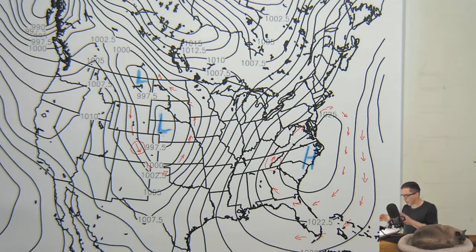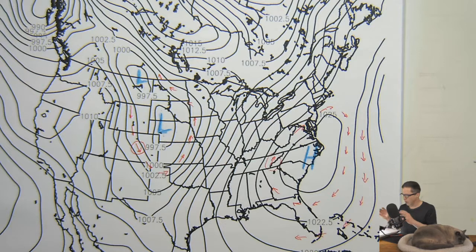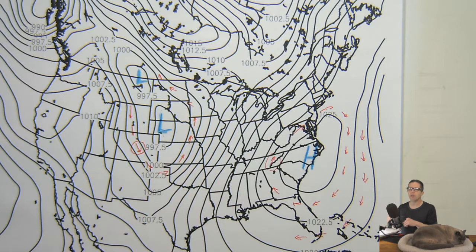If you get one that's in the southern hemisphere, just remember the rules are reversed. Around the high in the southern hemisphere it's counterclockwise; around the low in the southern hemisphere it's clockwise.